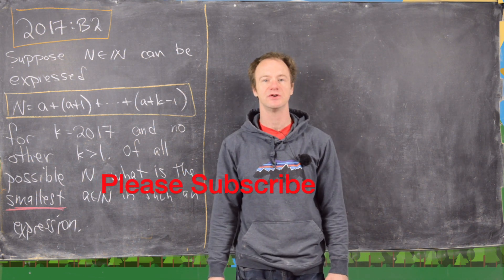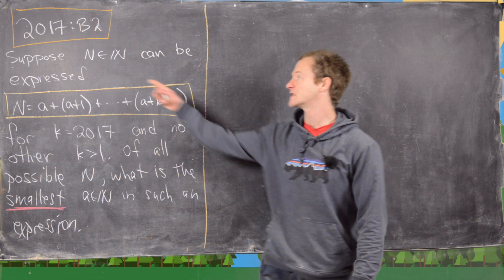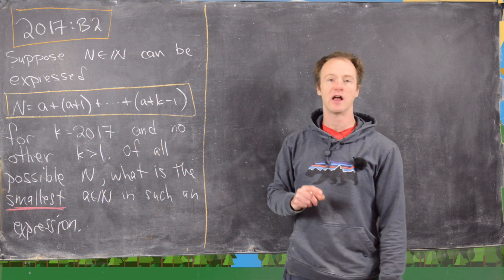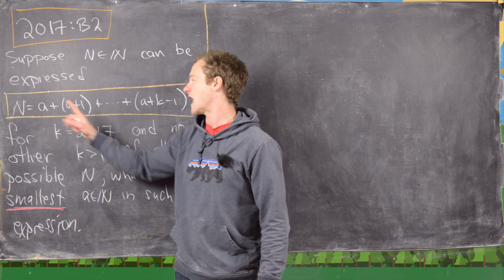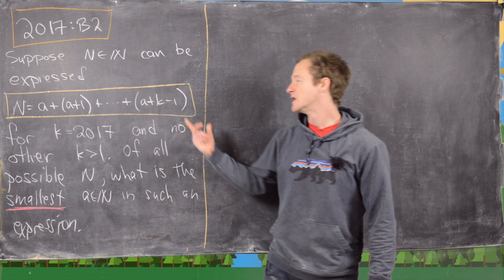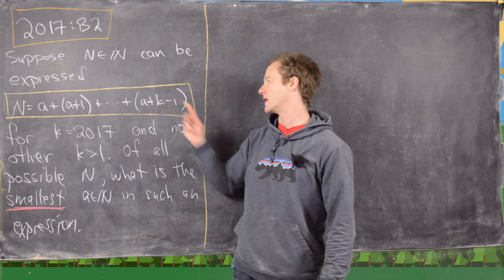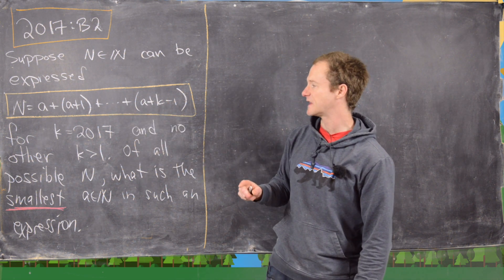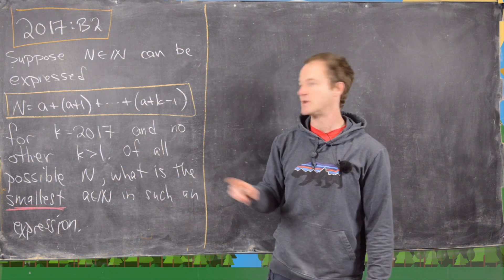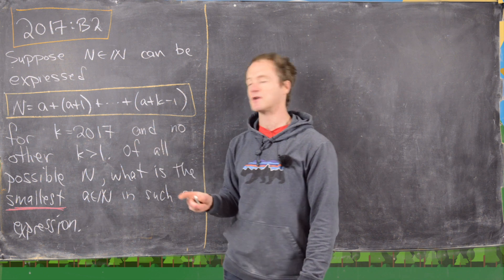In this video we're going to look at a solution to problem B2 from the 2017 Putnam exam. We want to suppose that we have a natural number n, a positive integer, that can be expressed as n equals a plus a+1 plus a+2 all the way up to a+k-1 — k consecutive terms. We suppose this expression exists for k equals 2017, but no other k bigger than 1. So there's only one way to make this expression, and that's for k equals 2017.